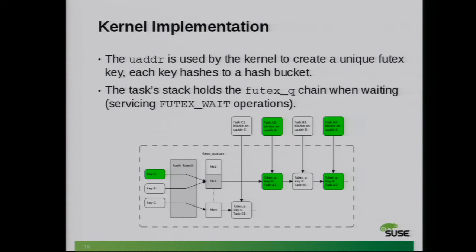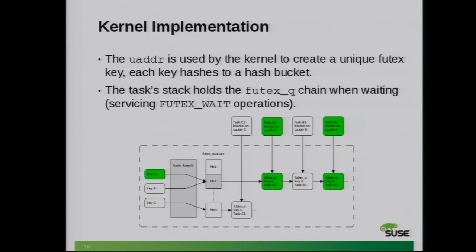The overall architecture is basically that the address is used to create a unique key. That key will hash into a specific bucket. The hash table can be different sizes. When you call into Futex wait — which is the first operation that lets the kernel know this address has a Futex associated to it — because the call doesn't return, the Futex waiter will create a data structure called a Futex queue, allocated on the stack since we're not returning until we're woken up.